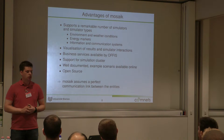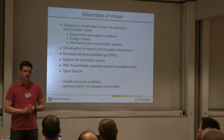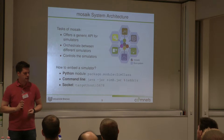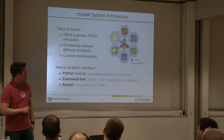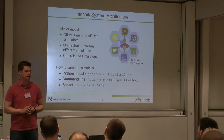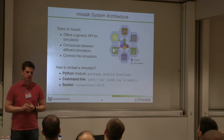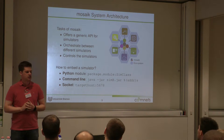Everything is well documented. We have several simulation scenarios and everything is available online, free for everybody, and open source. However, the Mosaic framework assumes a perfect communication link between all entities, and therefore we want to change that. In the Mosaic system, Mosaic sits at the center and connects all other simulators to its core, orchestrating between them — taking control and telling simulators when they can advance to the next time instance. We want to embed OMNET as one of these simulators.